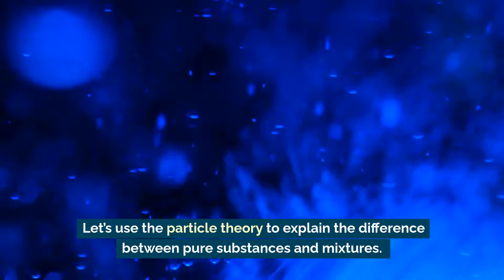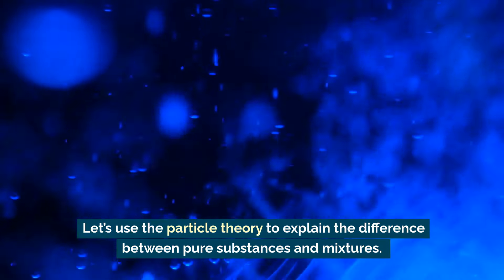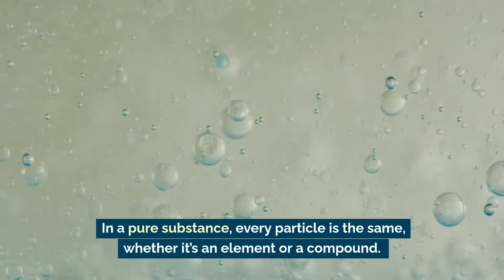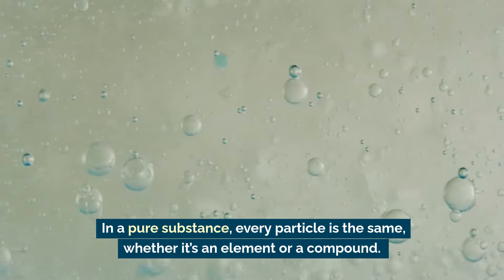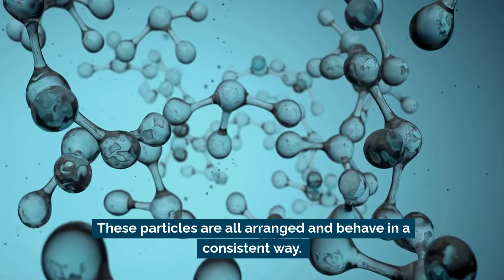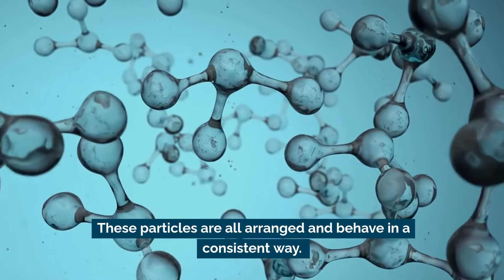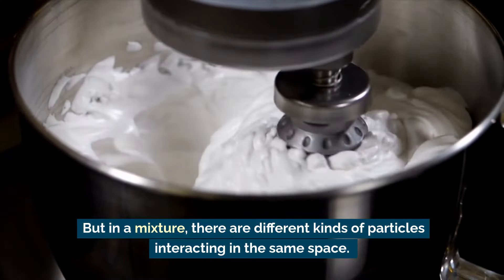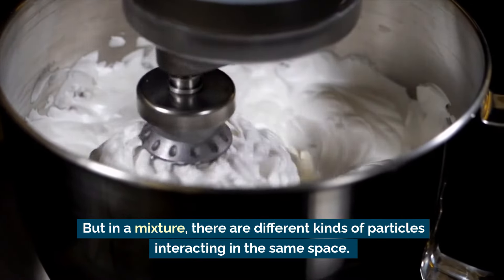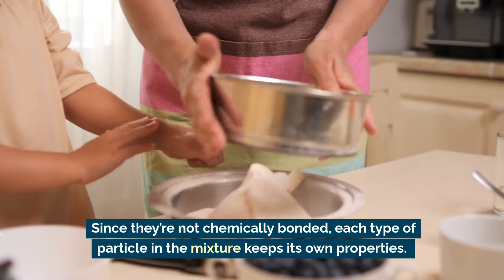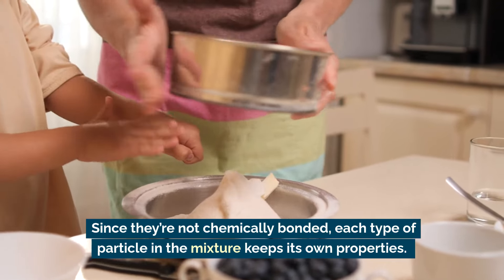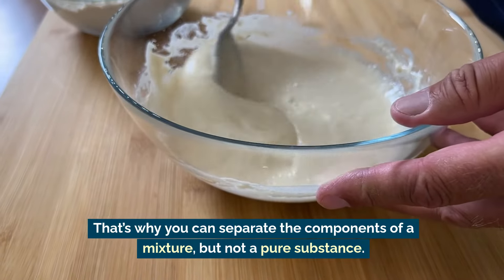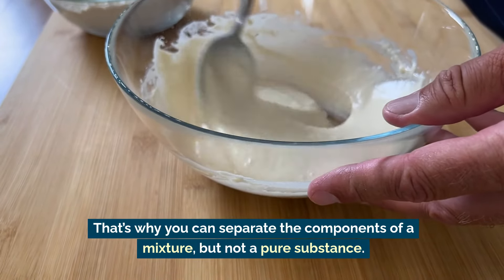Let's use the particle theory to explain the difference between pure substances and mixtures. In a pure substance, every particle is the same, whether it's an element or a compound. These particles are all arranged and behave in a consistent way. But in a mixture, there are different kinds of particles interacting in the same space. Since they're not chemically bonded, each type of particle in the mixture keeps its own properties. That's why you can separate the components of a mixture, but not a pure substance.